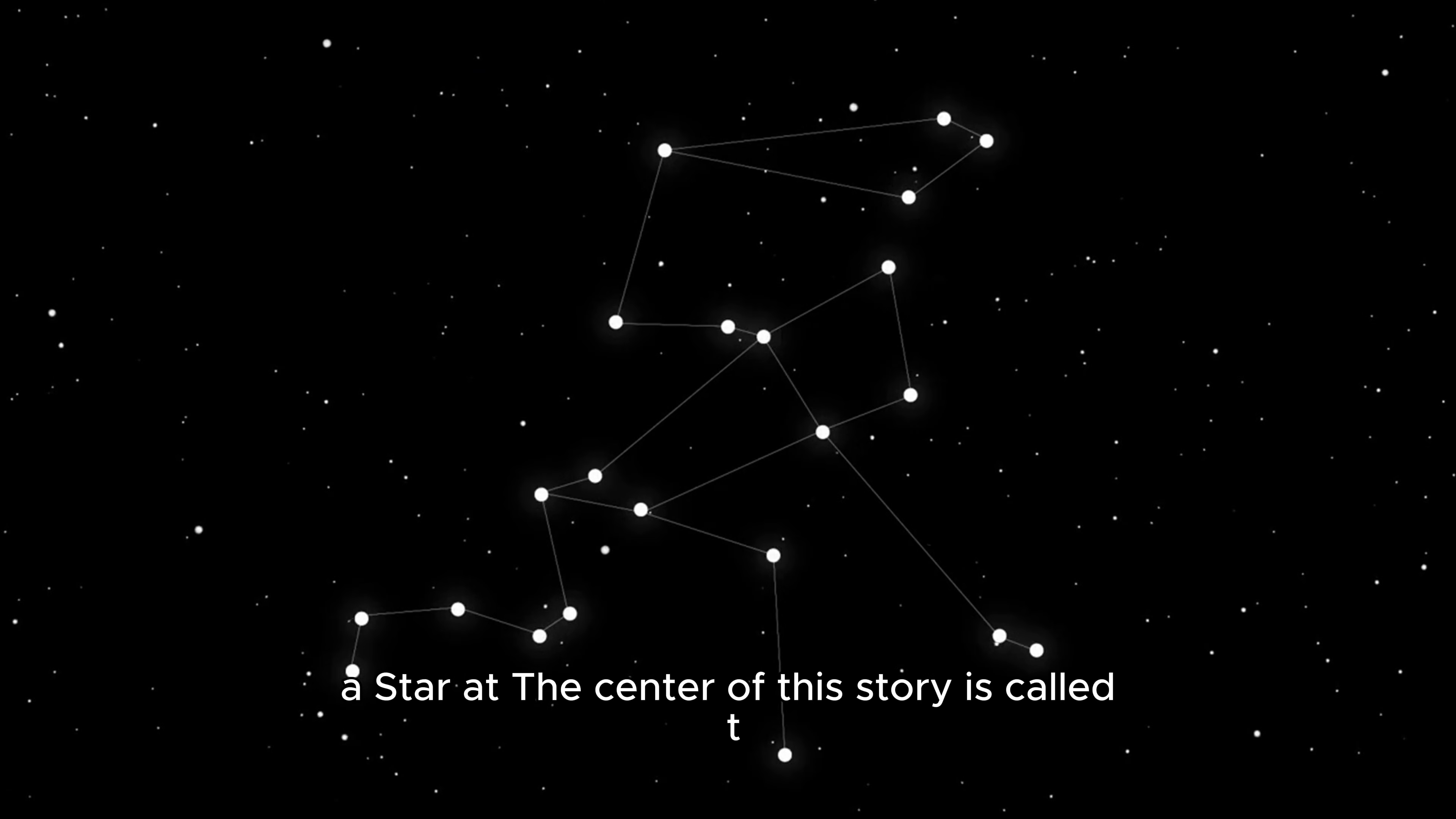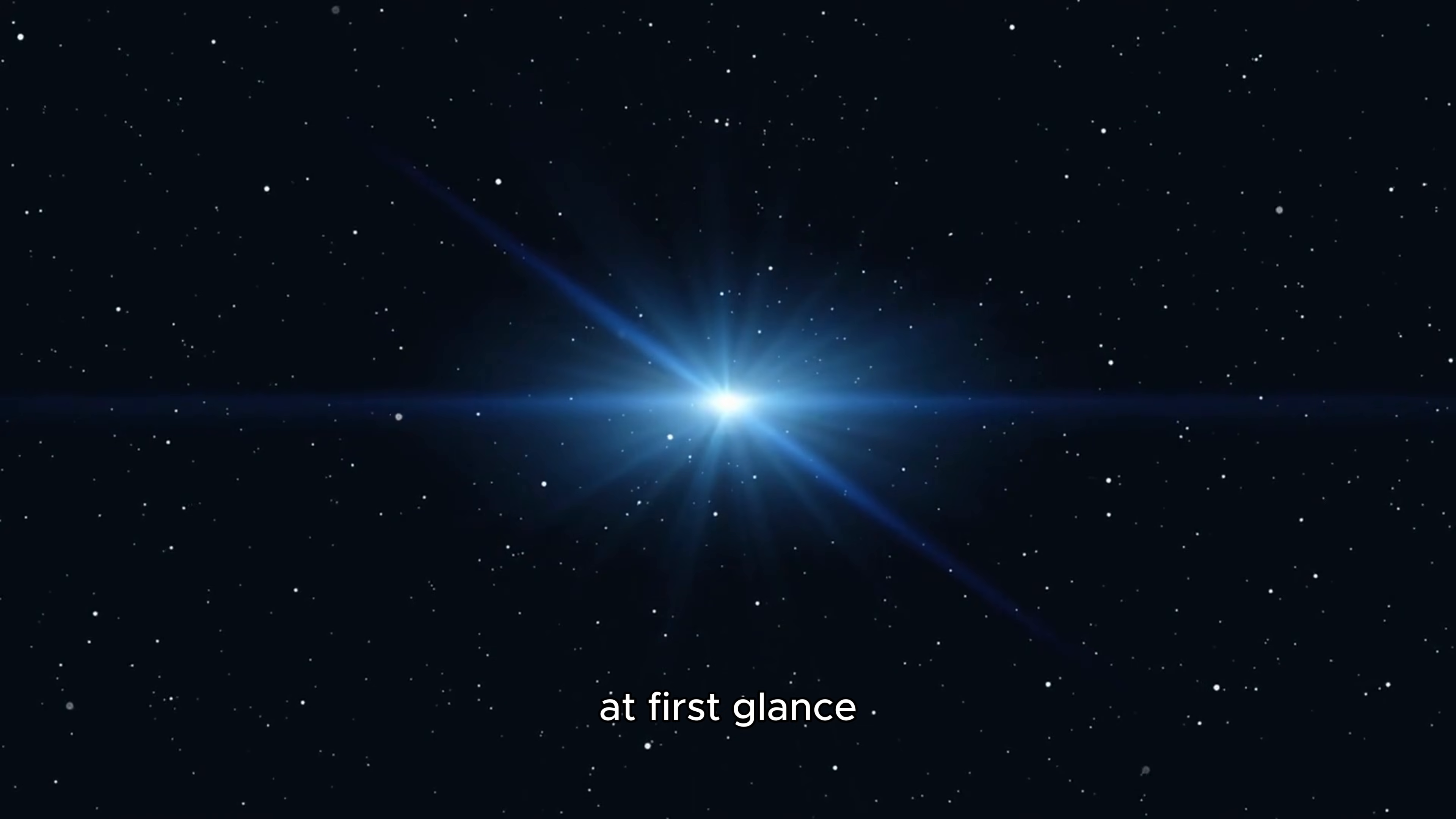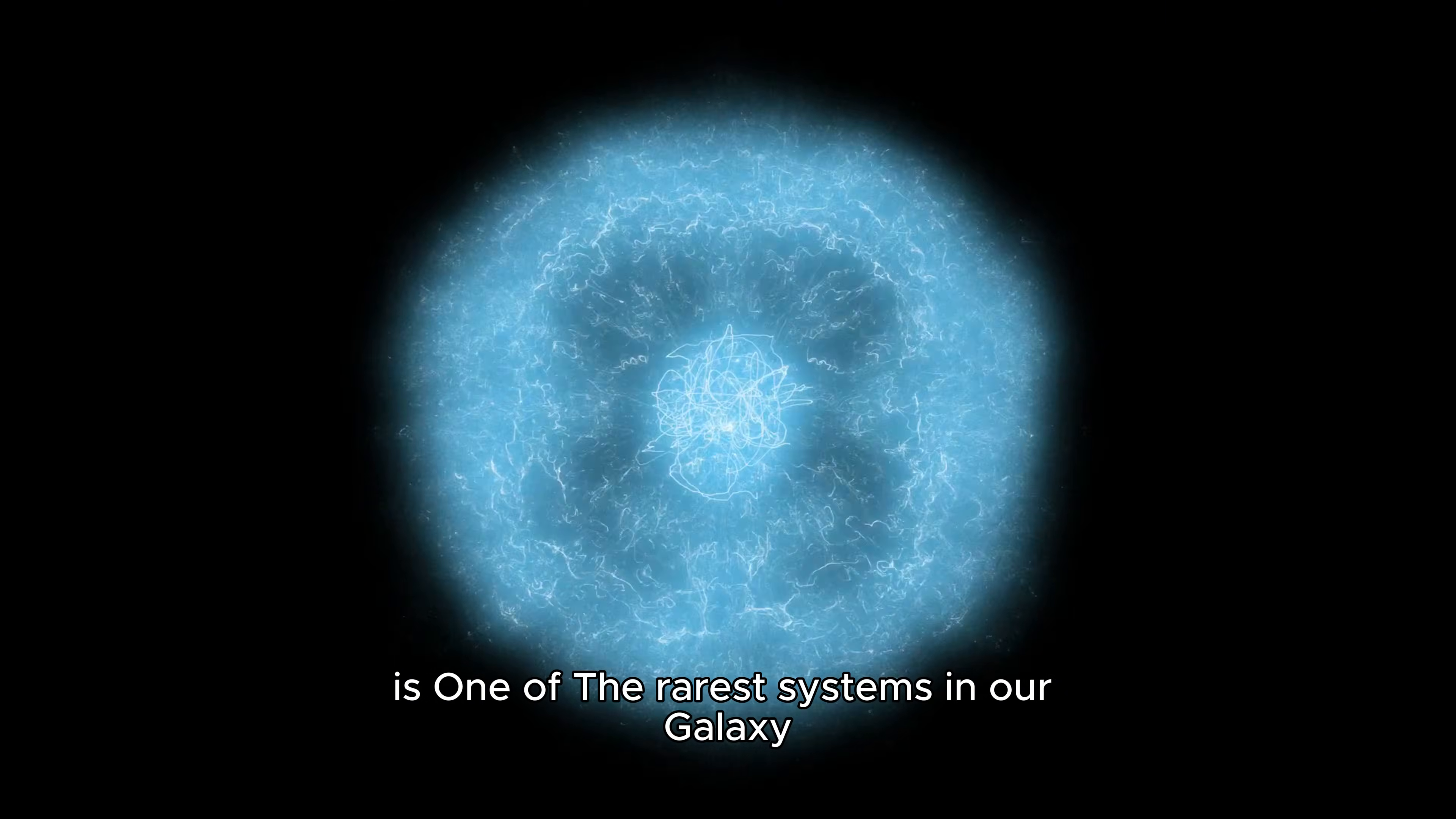The star at the center of this story is called T Coronae Borealis, located about 3,000 light years from Earth in the constellation Corona Borealis. At first glance, it looks unremarkable, invisible to the naked eye for most of its life. But T Coronae Borealis is one of the rarest systems in our galaxy, a recurrent nova.